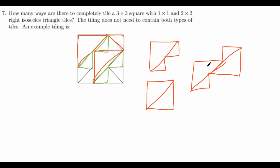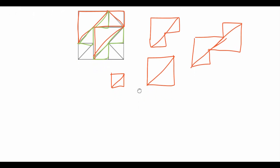We should continue looking for any other special cases. We find that there are actually no more special cases. Basically, all our tiles will consist of one of the following: two small triangles forming a 1×1 square, two big triangles forming a 2×2 square, an L-tile, or a Z-tile. So instead of considering right isosceles triangle tiles directly, we can consider these four tile types instead. Now all that is left to do is casework.